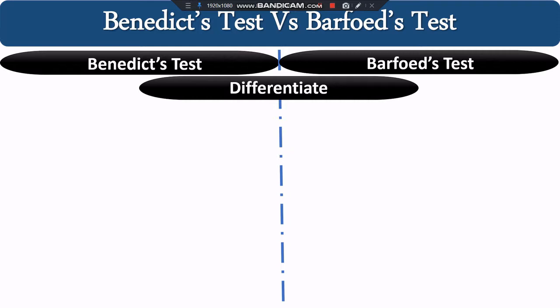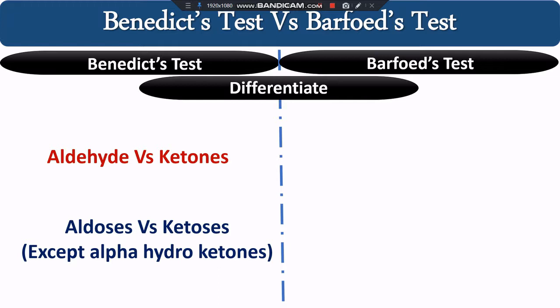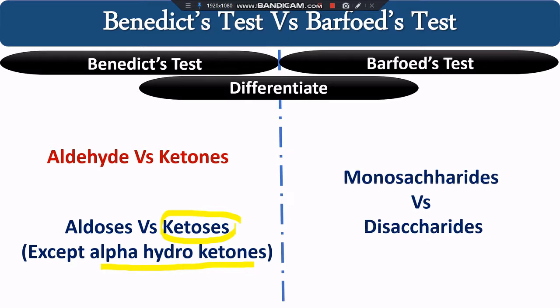The next difference is where each test is used. The Benedict test is used to differentiate between aldehyde and ketone sugars — more specifically between aldoses and ketoses. All aldoses (aldehyde-containing carbohydrates) plus alpha-hydroxy ketones give a positive test, whereas other ketones give a negative test. Fructose is an example of an alpha-hydroxy ketone. The Barfoed test is used to differentiate between monosaccharides and disaccharides: monosaccharides react very fast while disaccharides react very slowly.